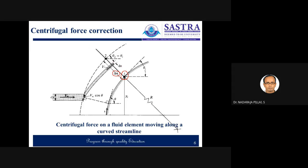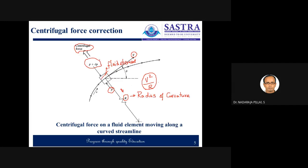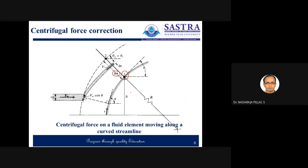We know that there is pressure p plus dp on one side and pressure p on the other side. The ultimate idea is to calculate the pressure at point i. In this diagram, s and n are the local coordinates — n and s — which are in the tangential and perpendicular direction of the streamline.